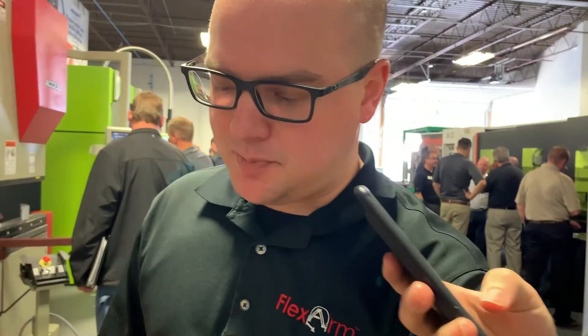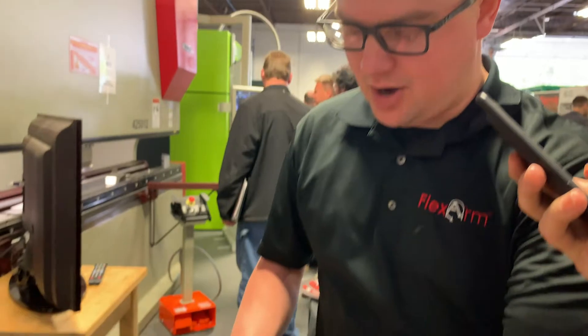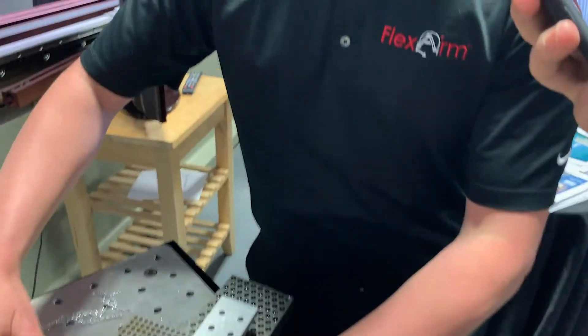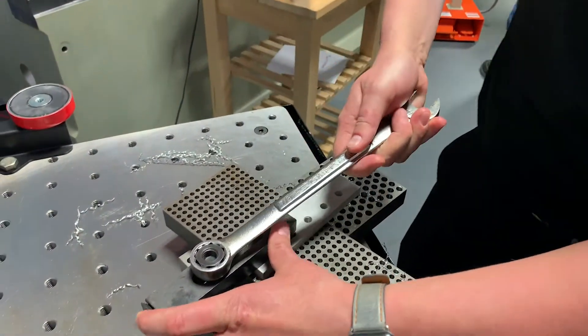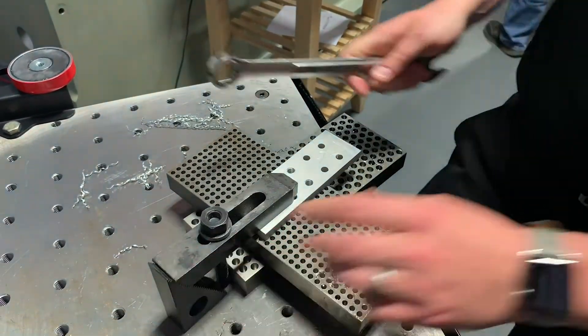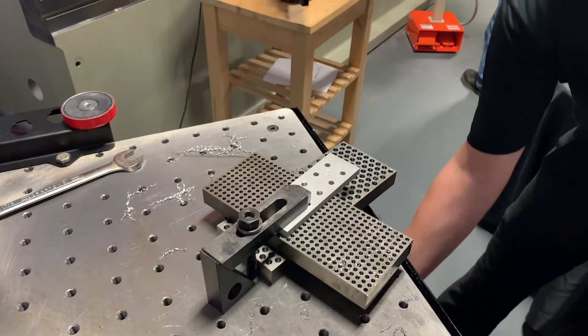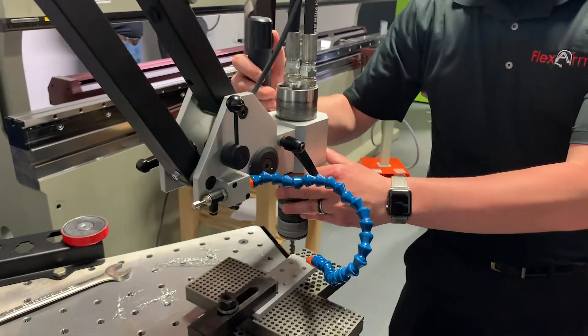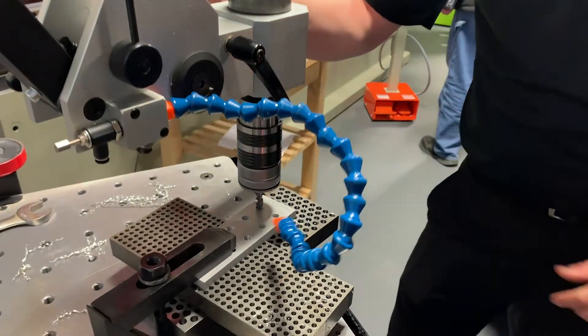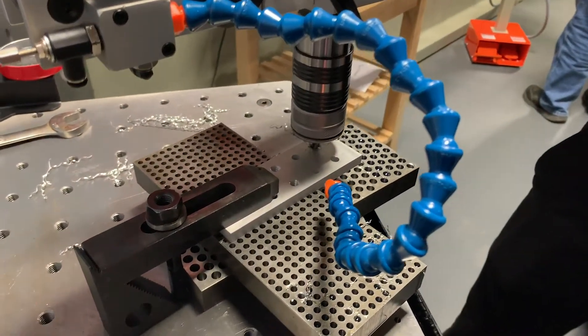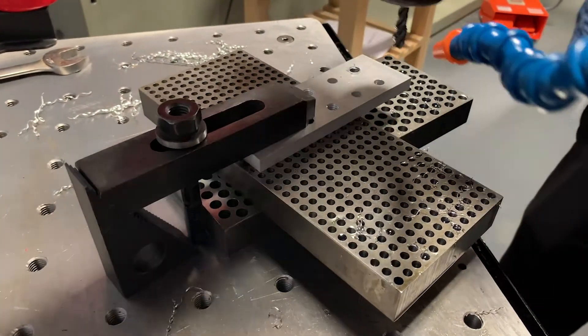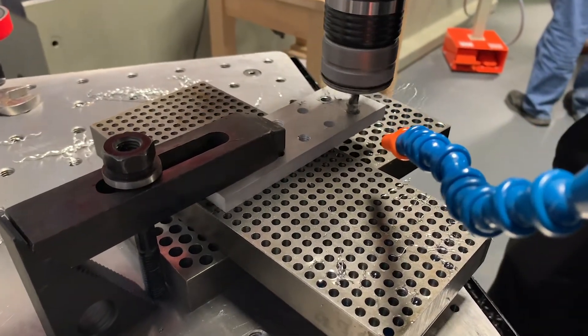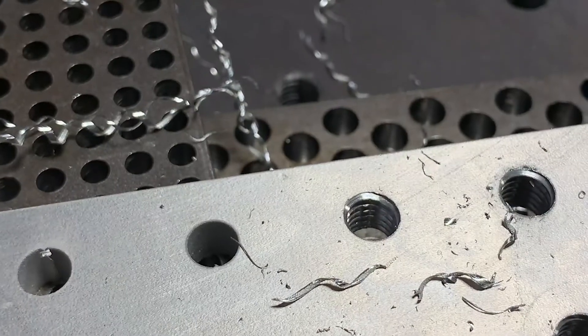We just got done running this part on the Flow water jet with Eric at Flow. Now we're going to come over here and show you just how easy it is to tap it on our flex arm GH18 hydraulic tapping arm. Simply clamp it down. Fire it up. Bring the arm up to the part. Butter. That's impressive.